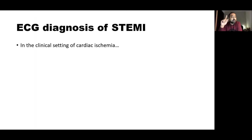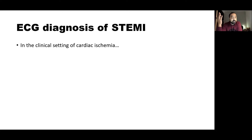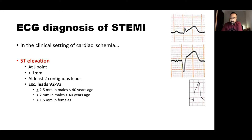A very important concept to understand is that whenever you are interpreting an ECG in an emergency setting, always see the clinical picture first. So if the patient presents with symptoms suggestive of cardiac ischemia and you see some diagnostic criteria on the ECG, that is the point where you diagnose ST elevation myocardial infarction. So what are these criteria?